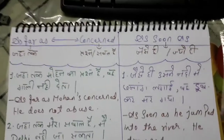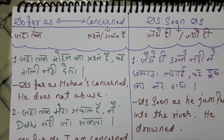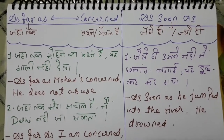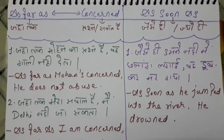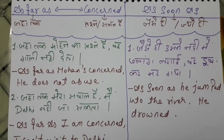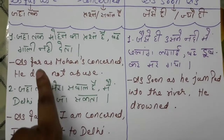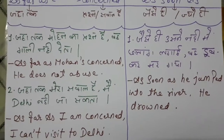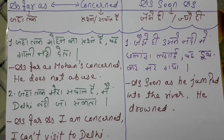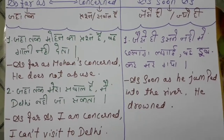Come to the first one — 'as far as'. 'As far as' is always used with 'concerned'. The Hindi meaning of 'as far as' is 'jahaan tak' and 'concerned' means 'prashn hai' or 'sawal hai'. For example: 'jahaan tak Mohan ka prashn hai, vahe gaali nahi deta.' So for 'jahaan tak' we use 'as far as', and for 'Mohan ka prashn hai' we say 'Mohan is concerned'. The next part — 'he does not abuse'.